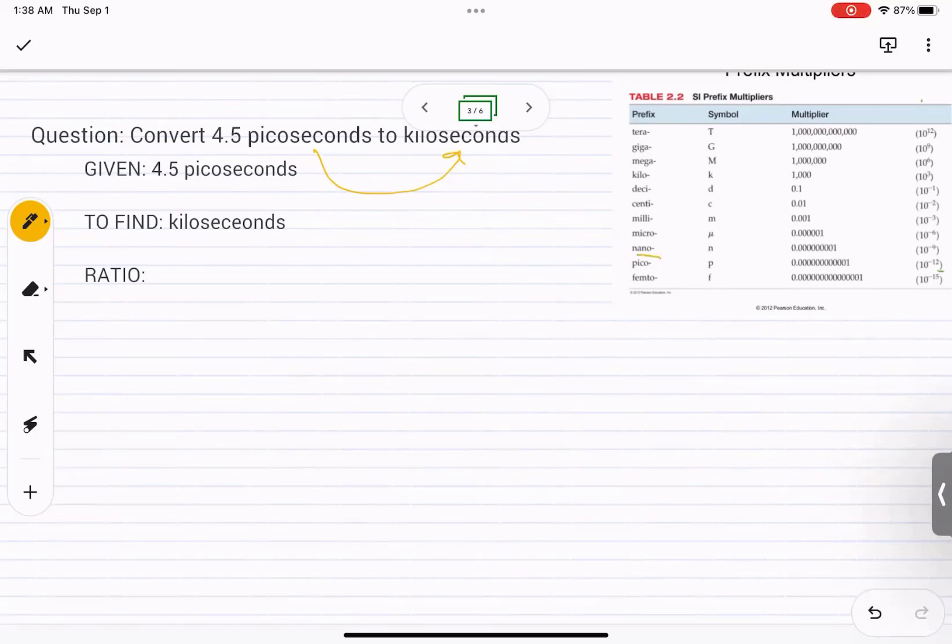What we can see is that from picoseconds, we can go to seconds, which is the base unit. And from kiloseconds also, we can go to seconds. So we are going to use that. Seconds is going to be something in common between both of those.